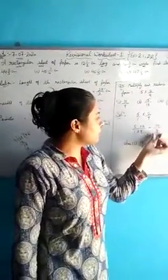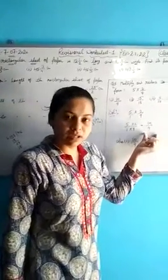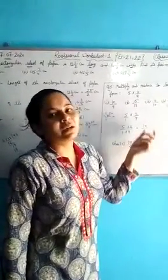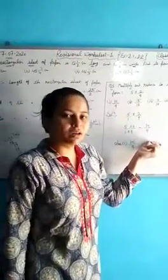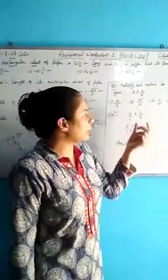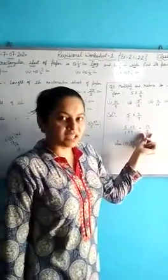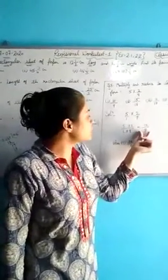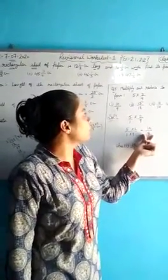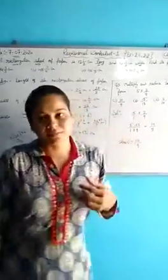If you get numbers which can cancel each other, then you have to cut them, but here 10 and 9 cannot be cut. So this means 10/9 is already our lowest form, our reduced form of the given fraction. So that is your answer.